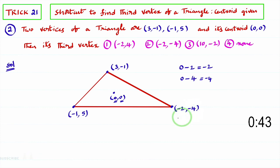So the third vertex of the triangle is minus 2, comma minus 4. Second option is the right option.